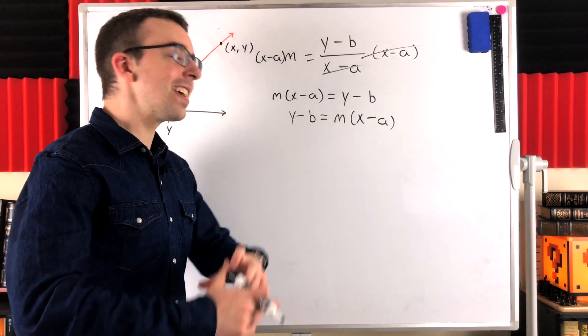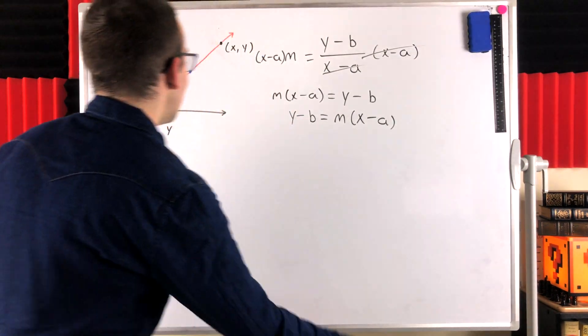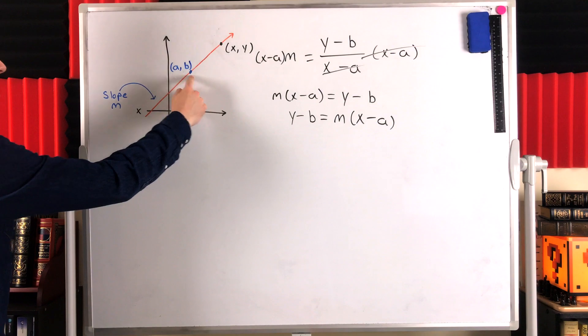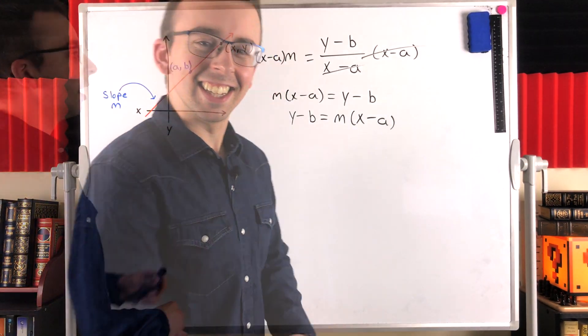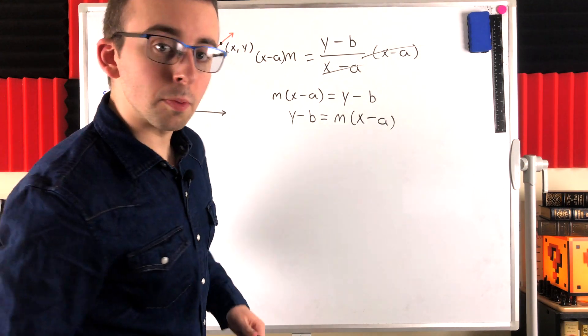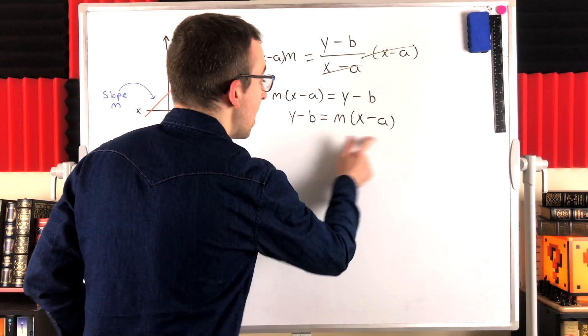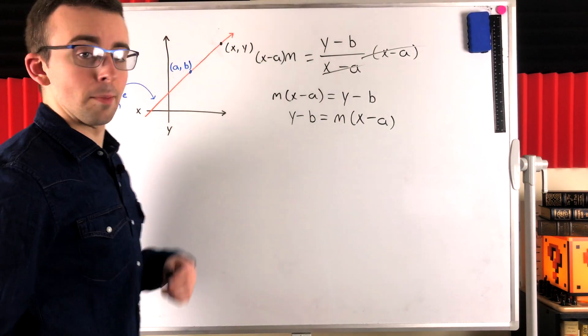This is point-slope form. This is the point-slope form equation of an arbitrary line that goes through a point AB and has a slope of M. Round of applause. So, this is where the point-slope form equation of a line comes from. This is the point-slope form equation.